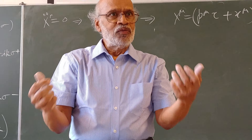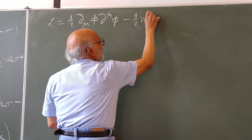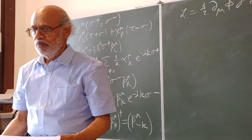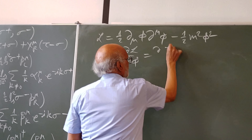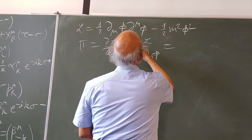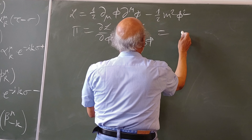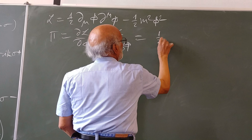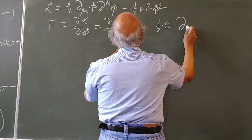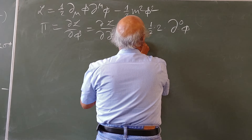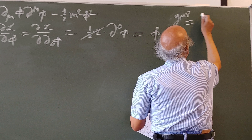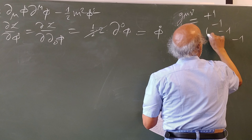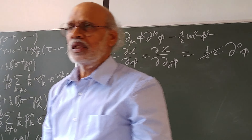The most simplest example would be a real scalar field theory. Then you can calculate the conjugate momentum pi as del L over del (del_0 phi), and from here you will find that this is just phi dot. Let me choose for field theory the signature plus 1, minus 1, minus 1, minus 1 for the metric. It's a flat Minkowski space, and we are considering a field theory in four dimensions.